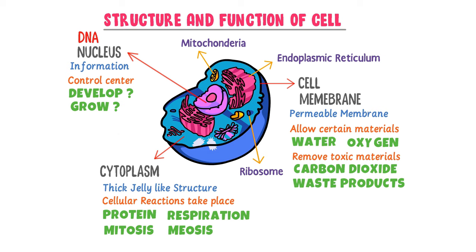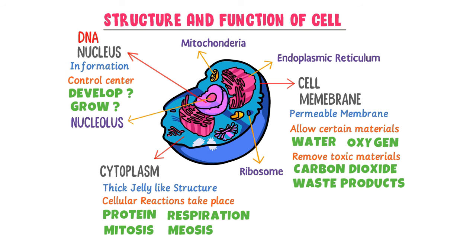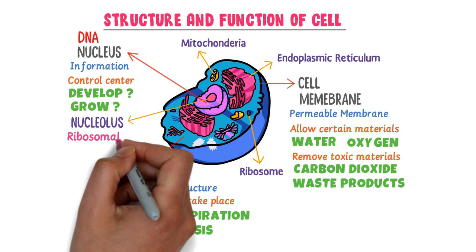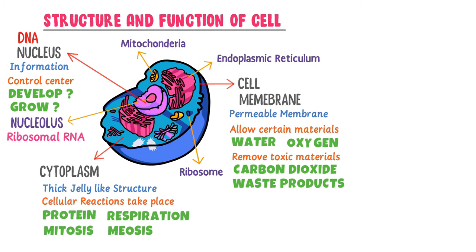Thirdly, the nucleus contains the nucleolus. It forms ribosomal RNA, or ribosomes. The newly made ribosomes are transported out of the nucleus through the nuclear pores to the cytoplasm, where they can do their job.